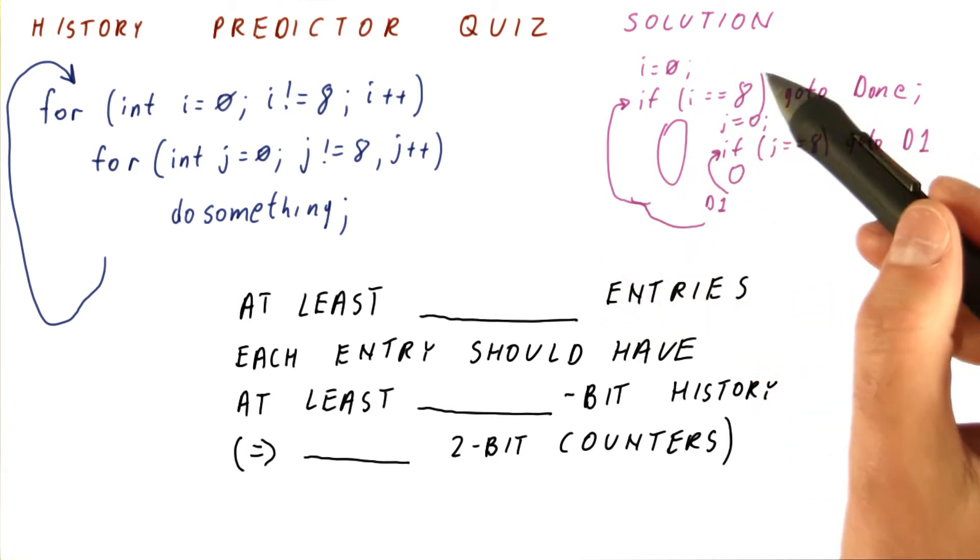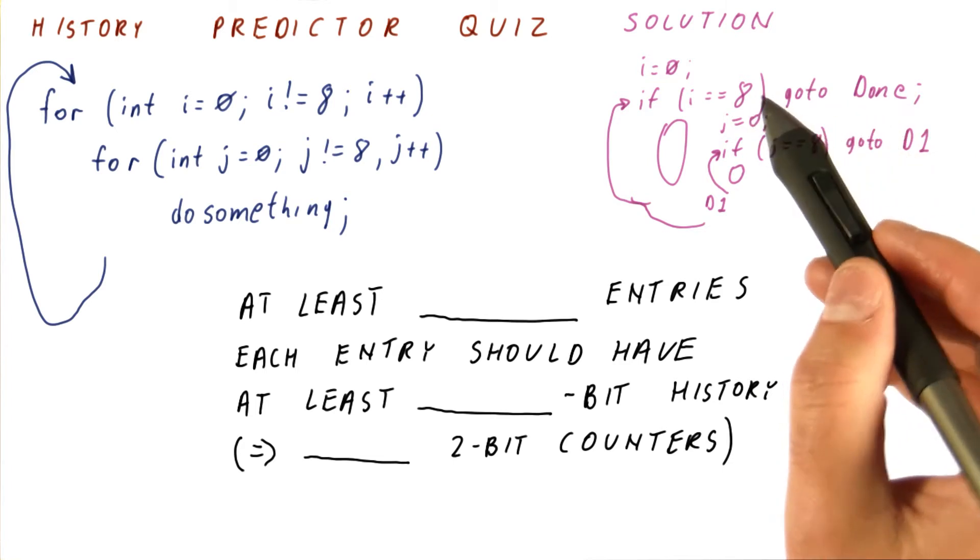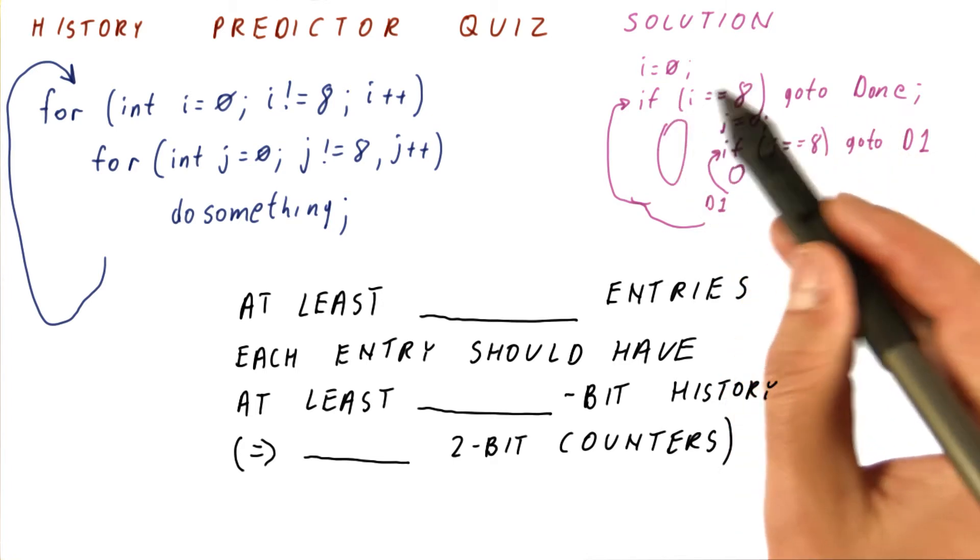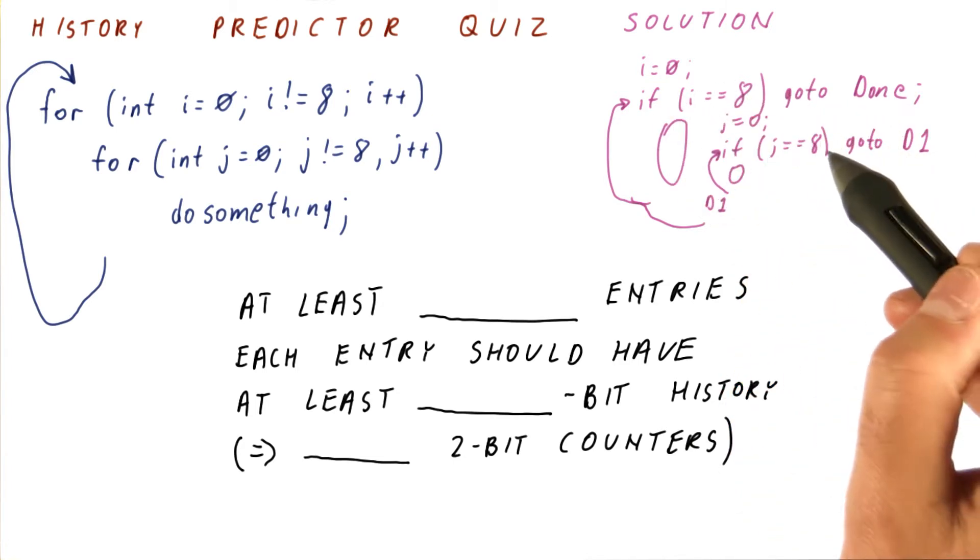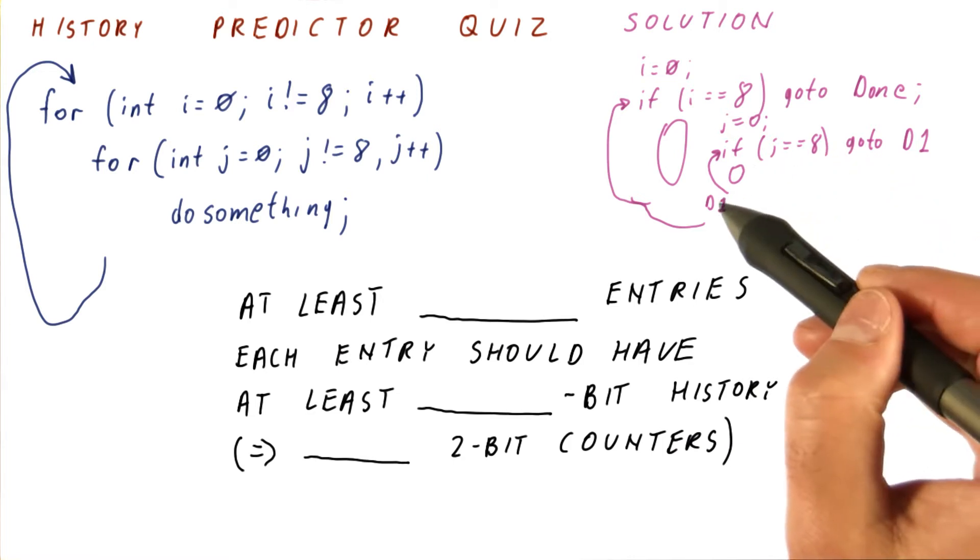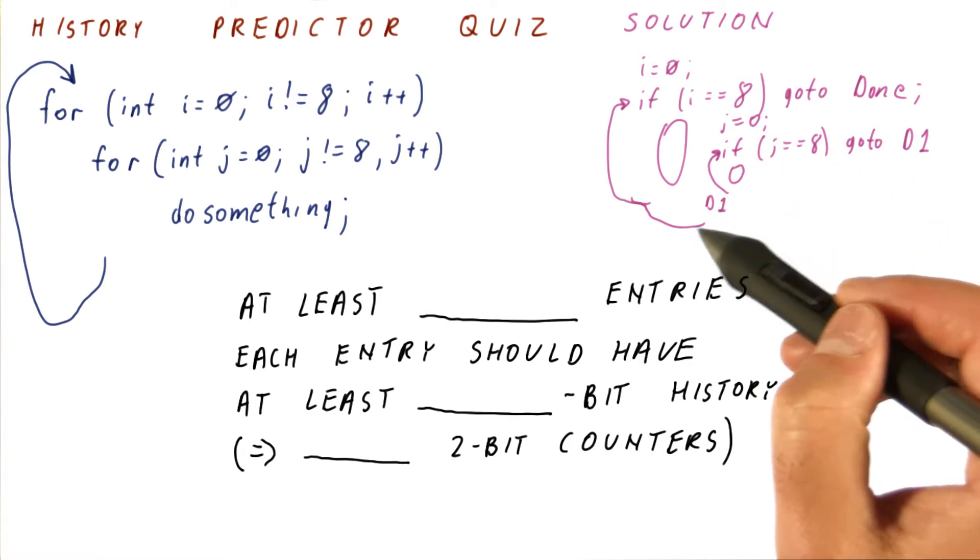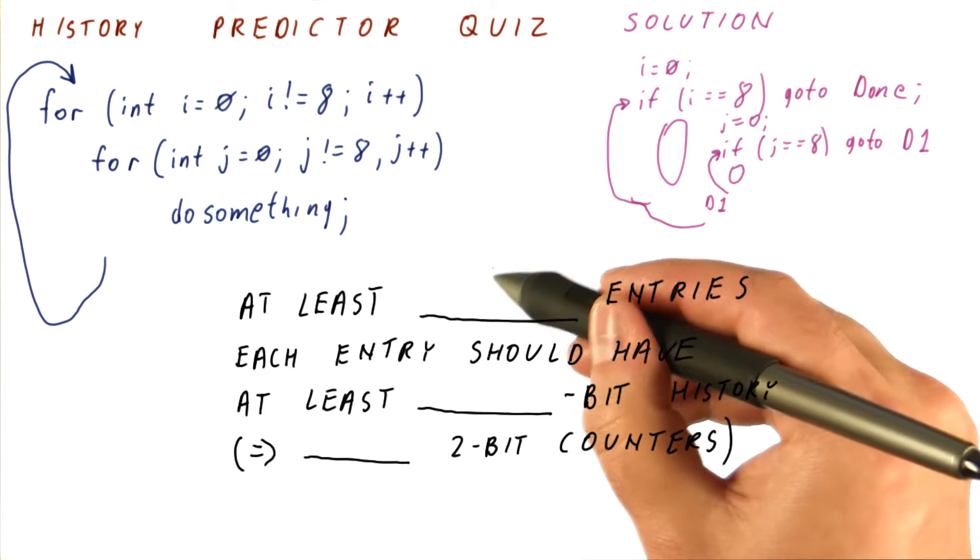Although in fact we need one entry for each instruction, but at least we need to have entries for branches. So we have a branch that does this here, we have a branch that does this here, we have a loop back branch here, and we have a loop back branch here. So we're talking about at least four entries.